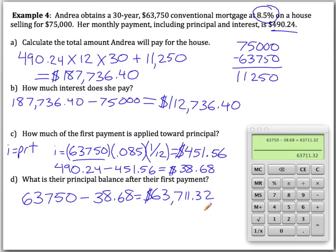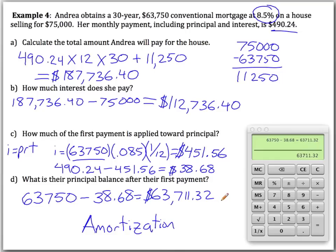We're going to look at how to do this using an Excel spreadsheet and something called an amortization table, which will help us determine all of these things about mortgage loans and ways to pay off loans more quickly and save on interest.